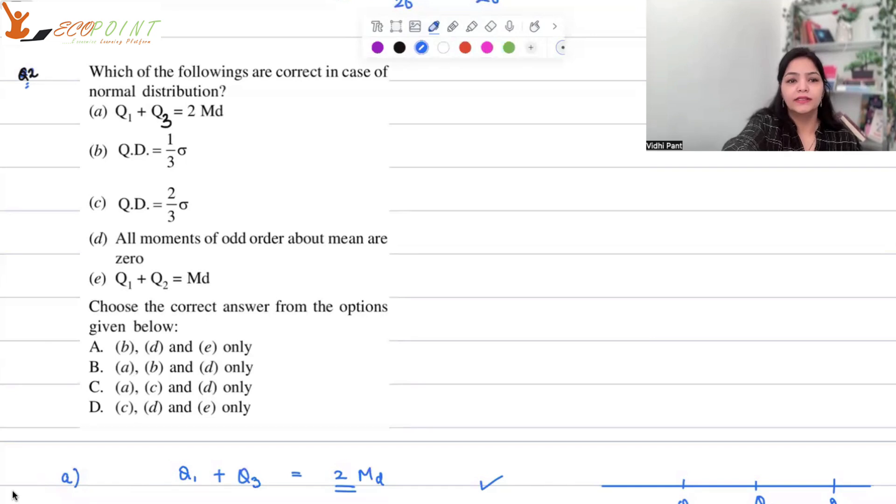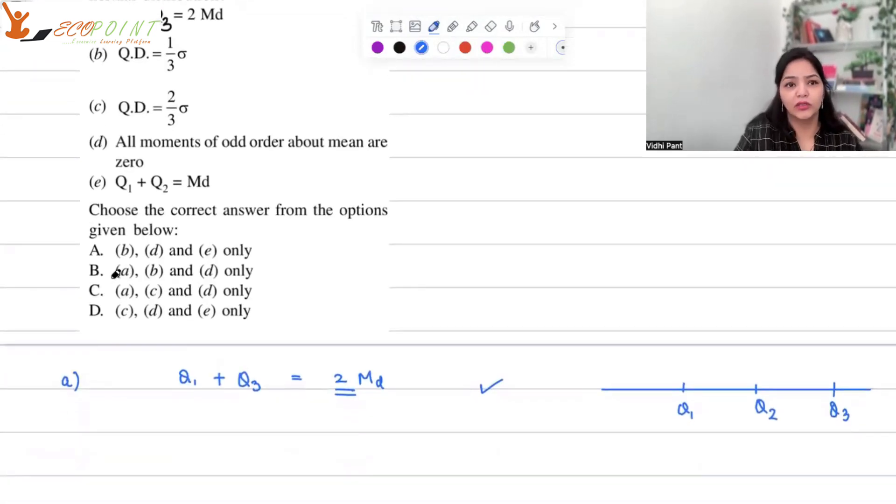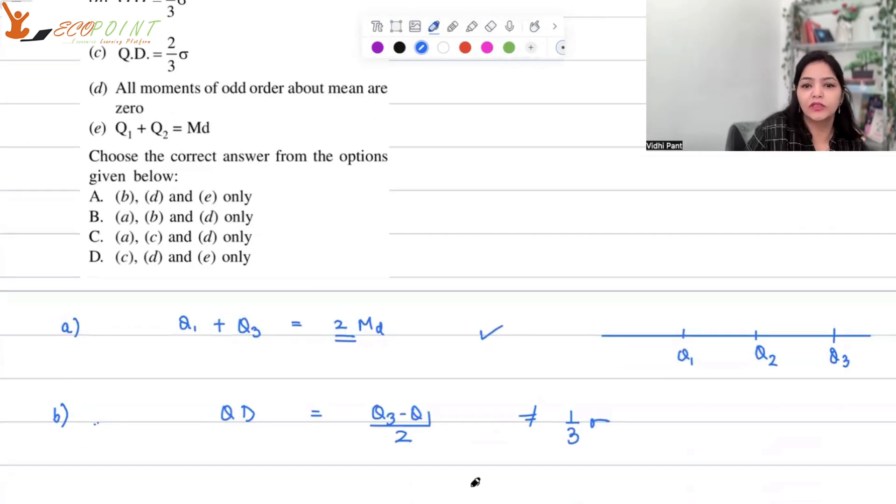The second statement is standard deviation - one third of the standard deviation is quartile deviation. What is quartile deviation? Quartile deviation is Q3 minus Q1 upon 2. Now, this is not equal to 1 by 3 sigma. In fact, for a normal or a symmetric distribution, this is actually equal to 2 by 3 sigma. So B is not a correct statement. In fact, C is correct.